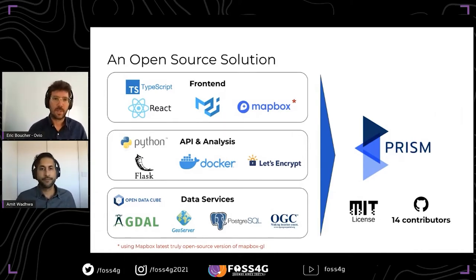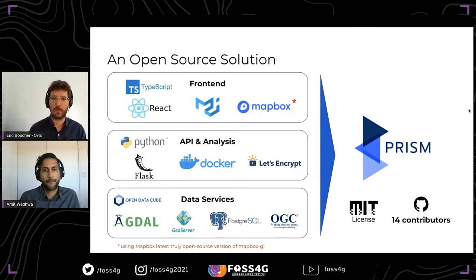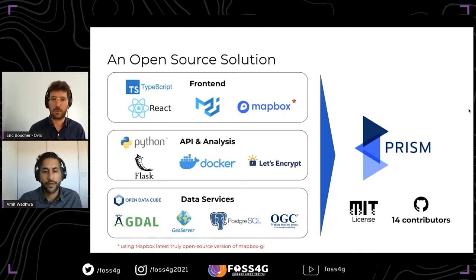We decided to build PRISM open source for multiple reasons. One is that we're leveraging a lot of existing open source tools, so it was important for us to also contribute back and share what we're building. It was also important for the collaboration we want to create — inviting people from multiple organizations facing similar problems to collaborate with us and build tools together, as well as building trust within government. Having the code open is a way to show exactly what we're doing and let governments inspect what's happening behind the scenes or adapt it to their specific use case.